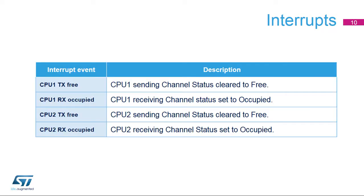Here is an overview of the Interprocessor Communication Controller interrupt. Each CPU has a TX-free interrupt associated to its own sending channel. Each CPU has an RX-occupied interrupt associated to the sending CPU channel.